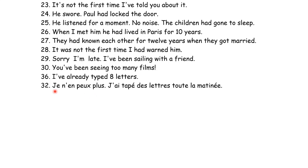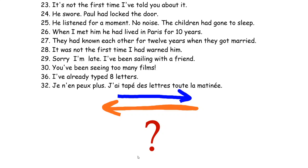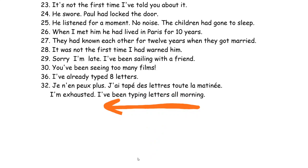In the next example: 'Je n'en peux plus' — that's what I'm focusing on — 'j'ai tapé des lettres toute la matinée.' Am I mentioning more information for itself, or am I using this information in relation to the first part? Obviously I'm explaining why I'm exhausted, therefore 'I've been typing letters all morning' is the appropriate translation.